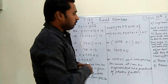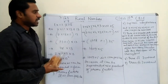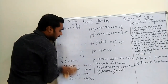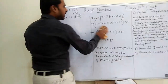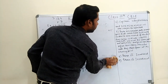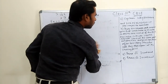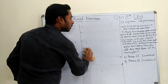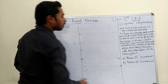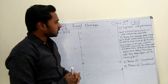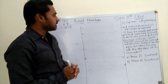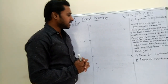Now we will start with the next question. You have to read the question correctly — it is very crucial but very easy; you just have to understand the question. The question states: there is a circular track around a sports field. Sonia takes 18 minutes to drive one round of the field. Ravi takes 12 minutes. Suppose they both start at the same point and at the same time and go in the same direction. After how many minutes will they meet again at the starting point?